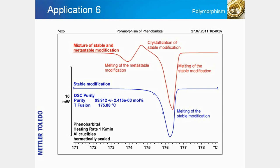Analysis of the melting behavior of a substance is an important method used for the quality control of pharmaceutical products. The melting curve yields information about polymorphism and allows the degree of purity to be determined. For example, the red curve shows that the metastable modification of the substance melts at a lower temperature than the stable modification. The melt then crystallizes to the stable modification and afterwards melts at a higher temperature. The percentage purity of a substance can be determined by evaluating the melting curve using a method based on the Van't Hoff equation, as shown by the blue curve for the stable form of phenobarbital.